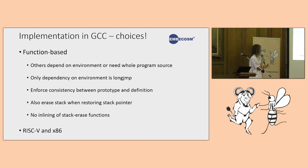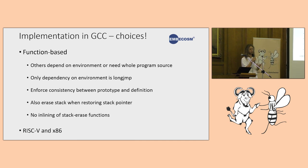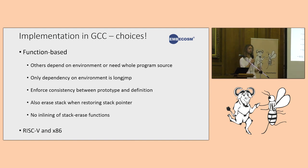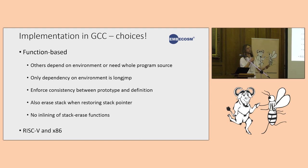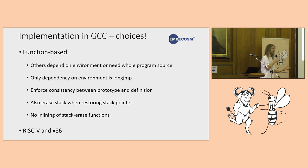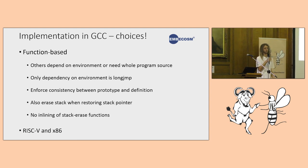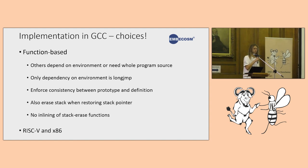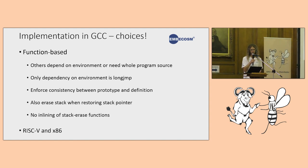The implementation so far targets RISC-V — because we care a lot about RISC-V — and x86, partly as a demonstration that the target-independent parts we've added are suitable for more than one architecture, and partly because x86 is a widely used architecture.